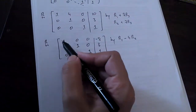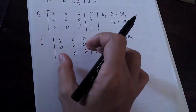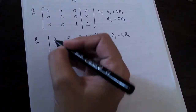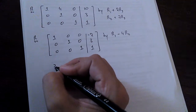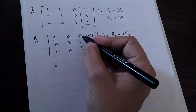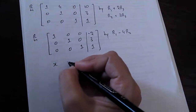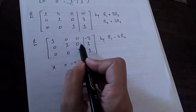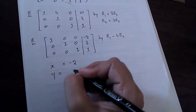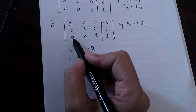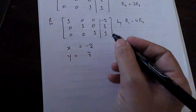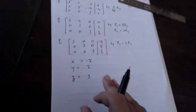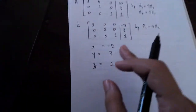Now we can read the solution. Each row represents one equation: 1·x + 0·y + 0·z = −2, so x = −2. Then 0·x + 1·y + 0·z = 3, so y = 3. And 0·x + 0·y + 1·z = 1, so z = 1. That's how you solve for the unknown variables using the Gauss-Jordan method.